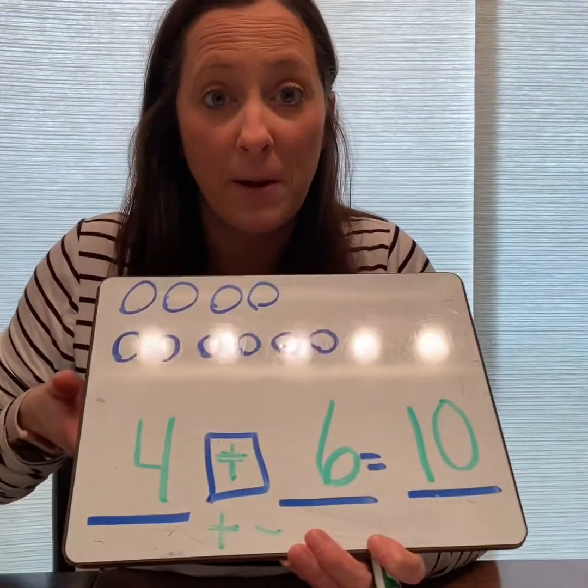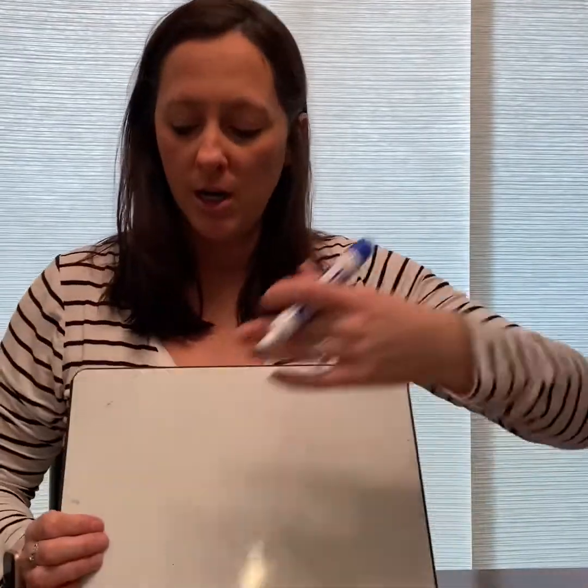Good work! Let's get our next paper ready for our next story problem. Alasia likes to eat Takis — they're like a Cheeto. Alasia had eleven Takis, so we're going to draw eleven Takis. Remember, we want to make sure we check that we have only eleven. I'm going to whisper count to make sure I have just eleven on my paper.